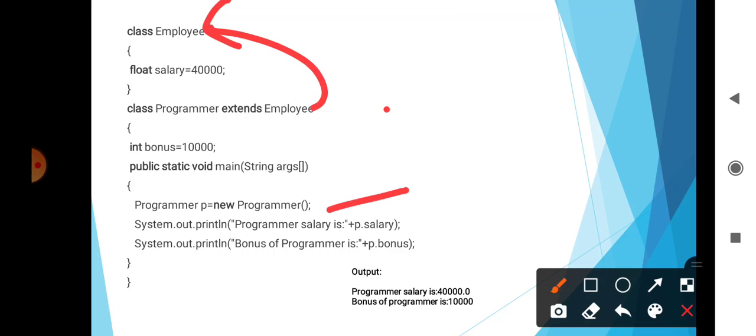System.out.println displays programmer salary as p.salary. This is possible because the salary field is included from the Employee class. Then we display the bonus of the programmer. When we run this program, the output is: Programmer salary is 40,000, and bonus of the programmer is 10,000.